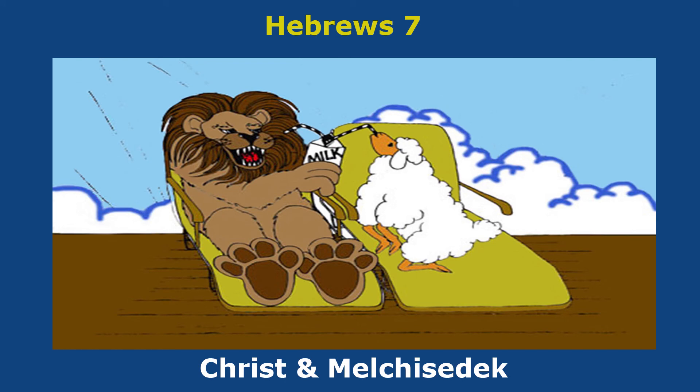Hebrews chapter 7. Chapter 7 is heaven — the clouds are used for heaven. 'Christ and Melchizedek' is Christ the lamb drinking milk on the deck, for Melchizedek.